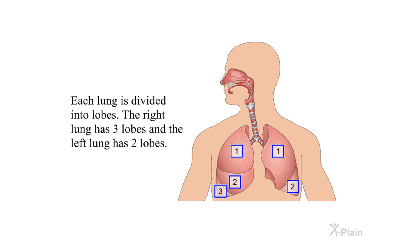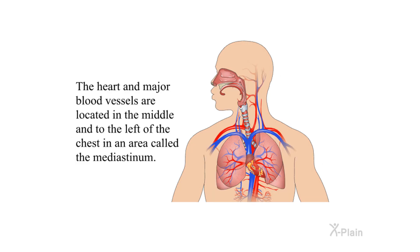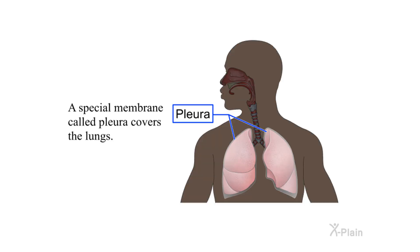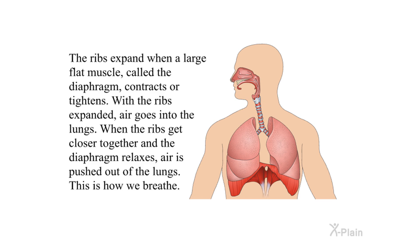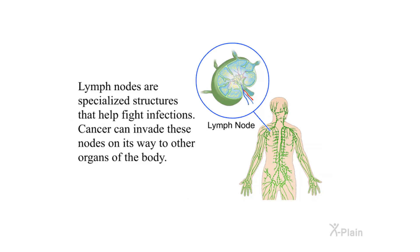Anatomy: Each lung is divided into lobes. The right lung has three lobes and the left lung has two lobes. The heart and major blood vessels are located in the middle and to the left of the chest in an area called the mediastinum. A special membrane called pleura covers the lungs. The ribs and the muscles that connect the ribs protect the lungs.